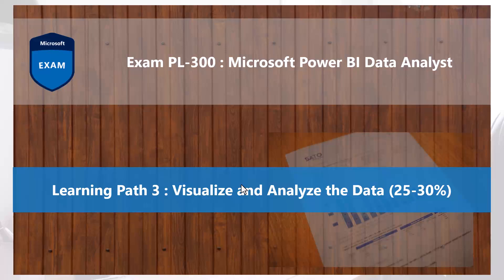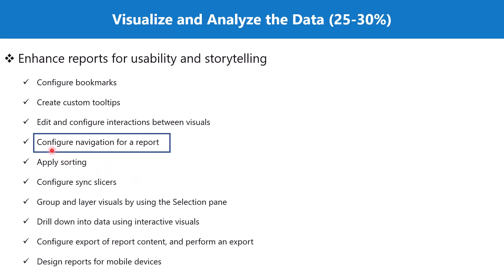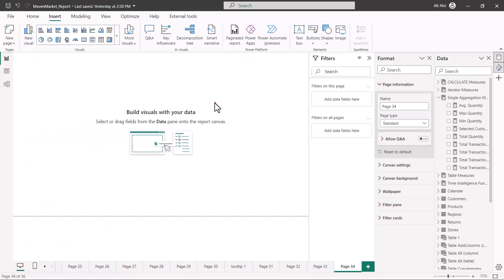Bismillah rahman rahim. Hello everyone, welcome back to the PL-300 exam preparation series where we are exploring the third learning path: visualize and analyze the data. In this video we are going to discuss the topic 'configure navigation for a report,' which is part of the section 'enhance reports for usability and storytelling.' In the previous video where we covered drill up, drill down, and drill through, we saw that a button was created in the report automatically and it was configured to go to the page from where we were controlling the drill-through functionality.